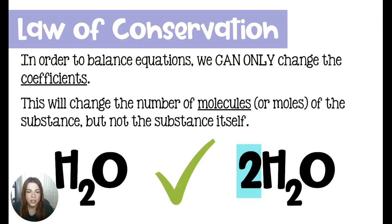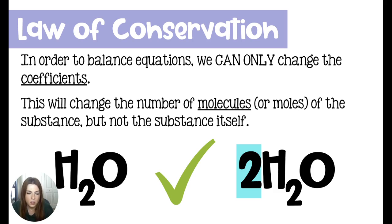To start off, we're going to talk about the law of conservation. I alluded to this in the last video on the types of chemical reactions, but in order to balance our chemical equations, we can only adjust coefficients. We need to balance chemical equations because they need to follow the law of conservation — we have to have the same number of atoms on both sides of our chemical equation, and those atoms must also maintain their identity when they are rearranging their bonds.